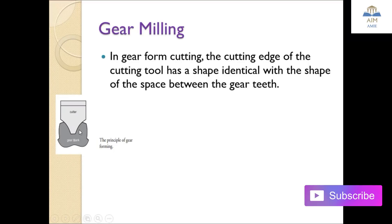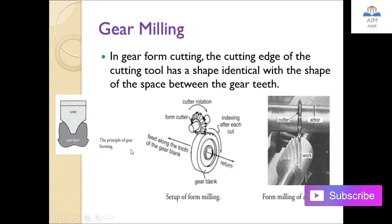In gear milling, the gear blank is positioned on the shank, the form cutter rotates, and indexing is carried out after each cut. The gear blank feeds circularly along with the cutter rotation. The cutter is mounted on the arbor and cuts the workpiece as per requirement.